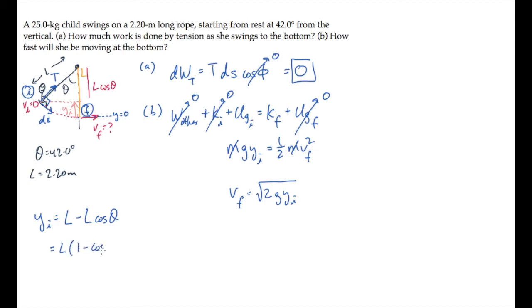Factor that, and substitute it back into our expression for the final speed. Now we can substitute all the known values, and calculate to find that at the bottom of her swing, she's moving 3.33 meters per second.